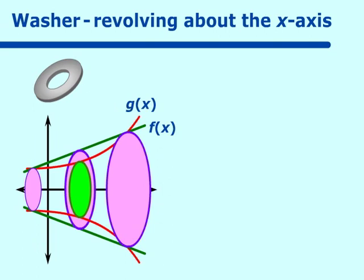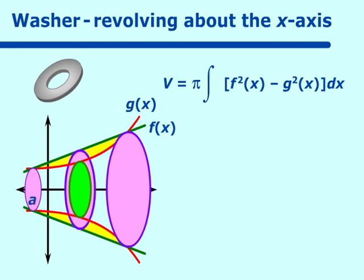Let's call the outer curve f of x and the inner curve g of x. To find the volume of this washer region, we find the volume of the outer function minus the volume of the inner function. So volume equals pi times the integral from a to b of f of x quantity squared minus g of x quantity squared, all dx. This is our general formula for finding the volume of a washer revolved around the x-axis.